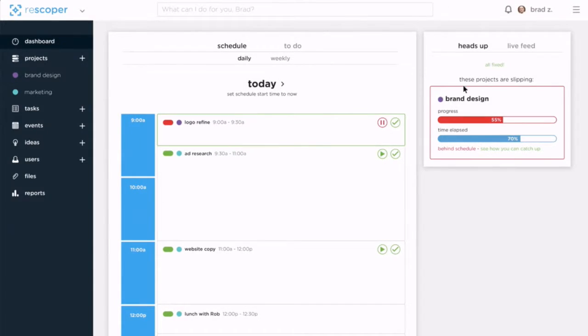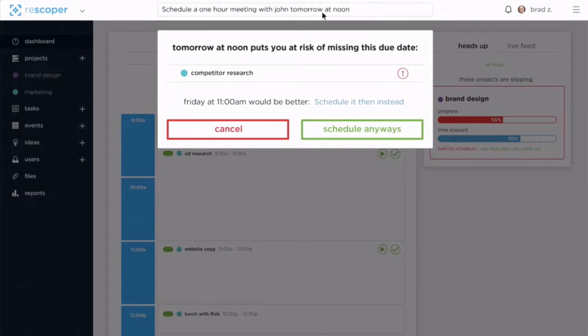Hey Rescoper, schedule a one-hour meeting with John tomorrow at noon. Just like talking to a real human, Brad can control Rescoper using natural language. And while his calendar showed some time to sneak in one more meeting, turns out he needs that time to get work done. Rescoper caught on to that. But luckily, it looks like Friday at 11 would be much better, and won't overwork him. So let's schedule it for them instead.